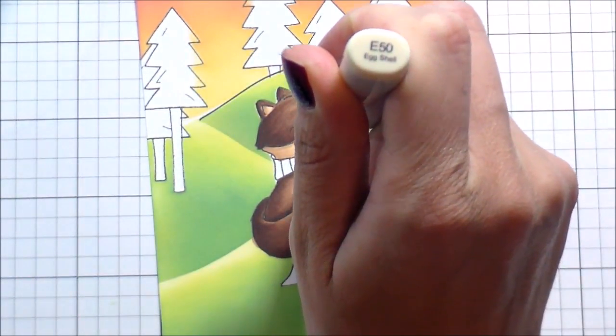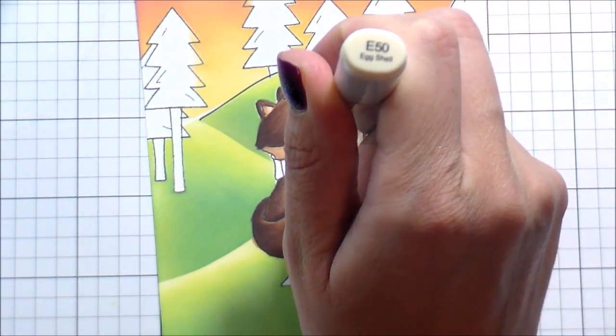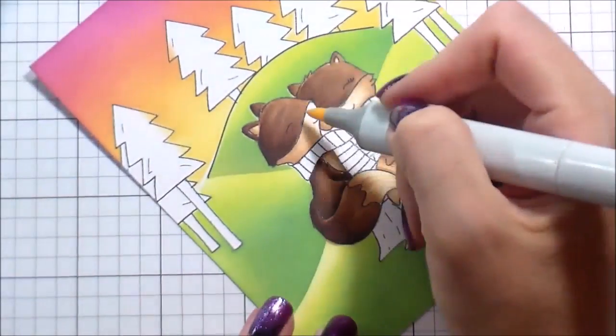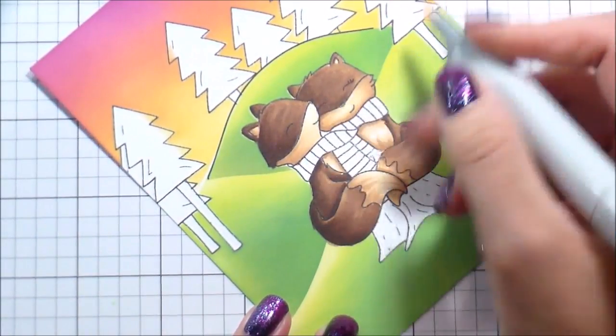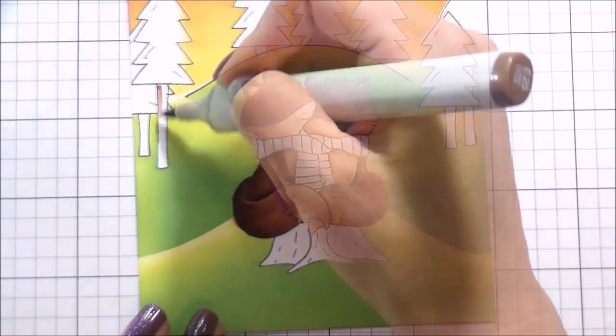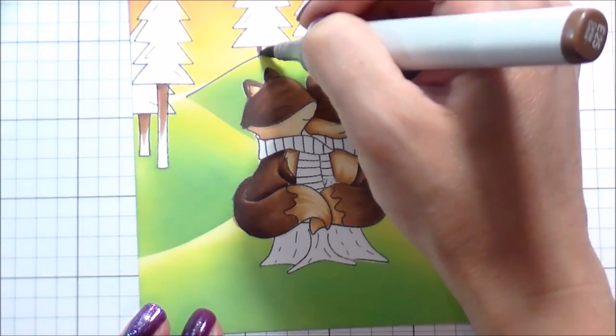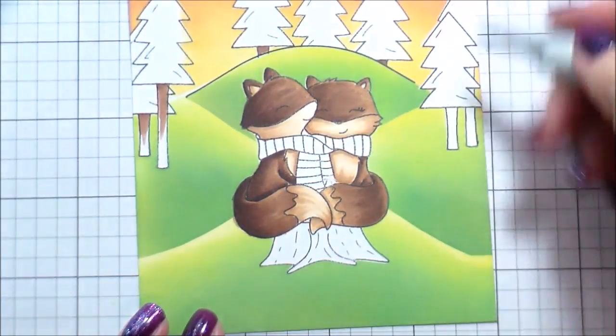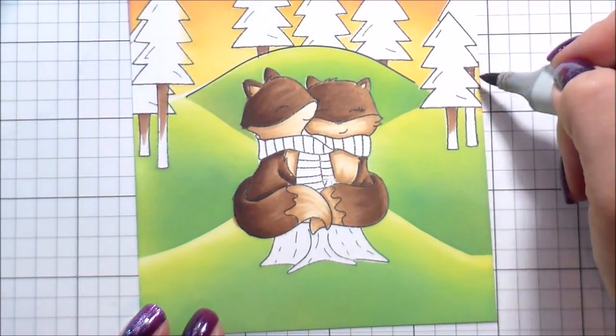So I'm using this E50. Remember how I said I left a lot of white on their faces and bellies. So I just went back in with this E50 to kind of blend it out because I felt like the bright white didn't make sense. I'm going to use the same E20 family to color in the trees.